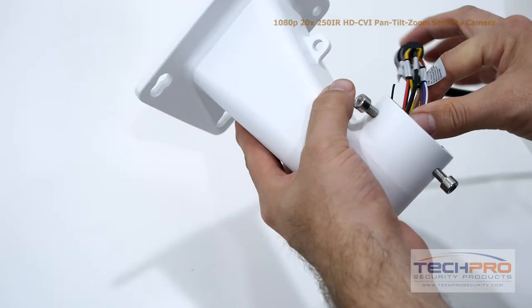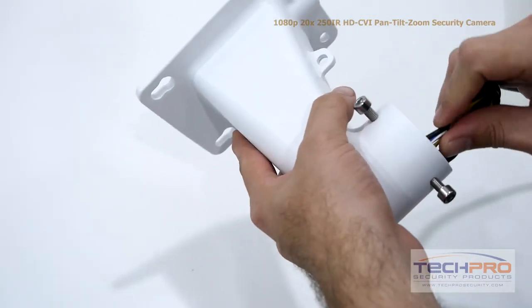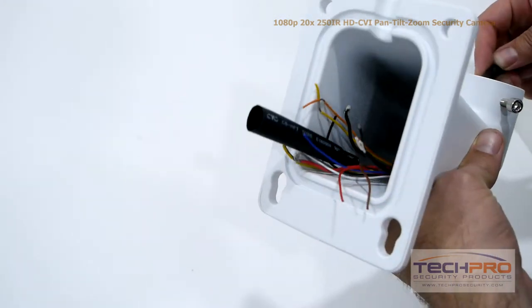Before you mount the camera, you'll first have to attach the wall mount. Feed the cabling all the way through the narrow end of the wall mount and out the other side.